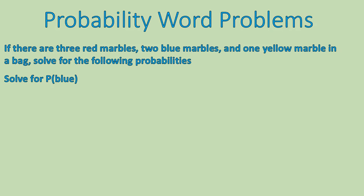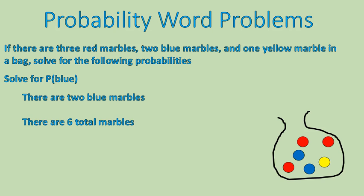Our next probability word problem is the same situation, but now we're solving for the probability of a blue marble. Same bag, solving for the probability of blue. There are two blue marbles out of our total of six marbles. So the probability of drawing a blue is two out of six. Now, we are going to reduce that down to lowest terms by dividing by our common factor of two. We have to remember to reduce these fractions down to lowest terms. It helps us to keep things simple. So that is the probability of drawing a blue marble.